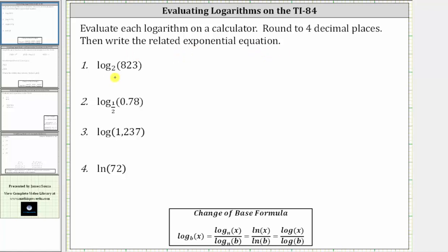For number one, we have log base two of 823. Most calculators only have buttons for natural log or log base e, as well as common log or log base 10. Therefore, in most calculators to evaluate log base two of 823, we would need to use the change of base formula.